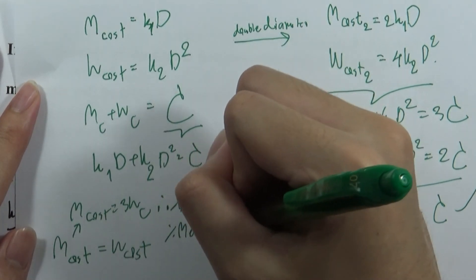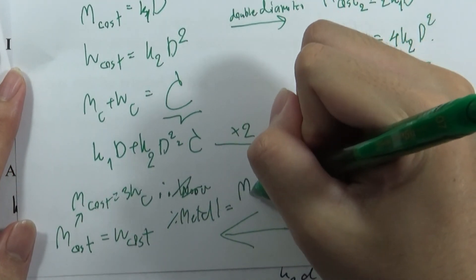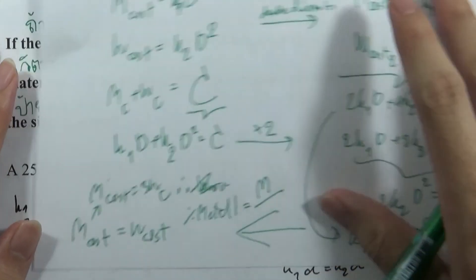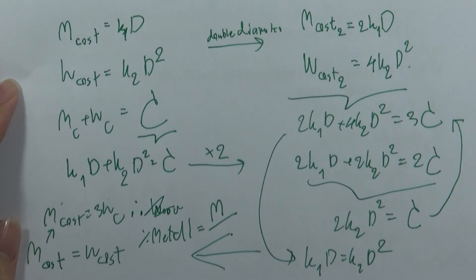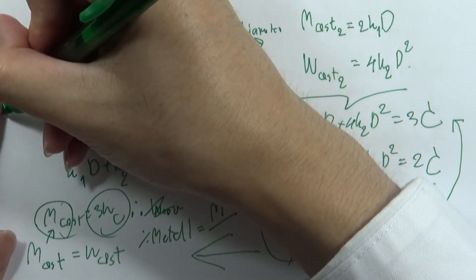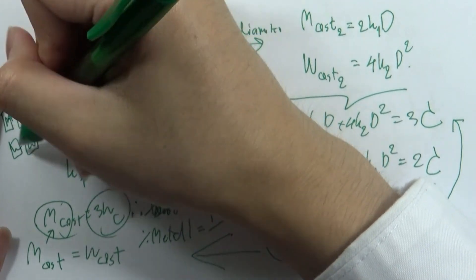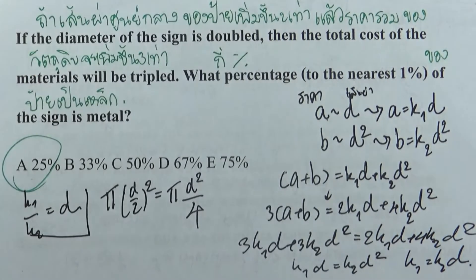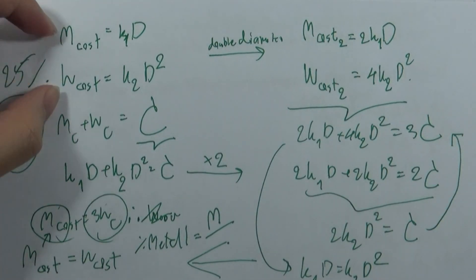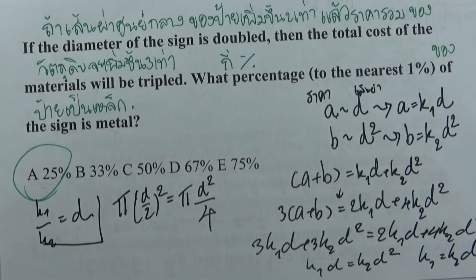เราต้องการหา % Metal. % Metal จะได้มาจากปริมาณของ Metal คือ M โดยที่ M = 3W. ดังนั้น % Metal = M / (M + W) = 3W / (3W + W) = 3/4... รอสักครู่ — ผลสุดท้ายได้ว่า M คิดเป็น 25%. ตอบข้อ A. สรุปสำหรับข้อ 24 ตอบ 25% ข้อ A.